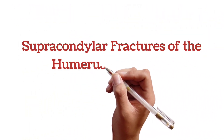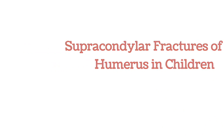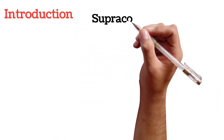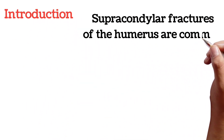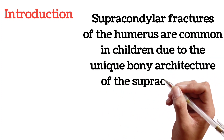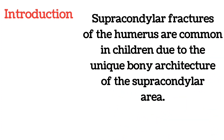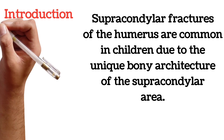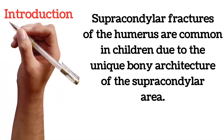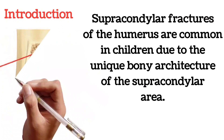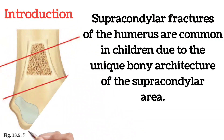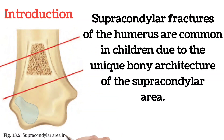Today's topic is supracondylar fractures of the humerus in children. Supracondylar fractures of the humerus are common in children due to the unique bony architecture of the supracondylar area. In this video, we will discuss the mechanism of injury, classification, clinical features, radiographic evaluation, management options, and potential complications associated with supracondylar fractures in children.